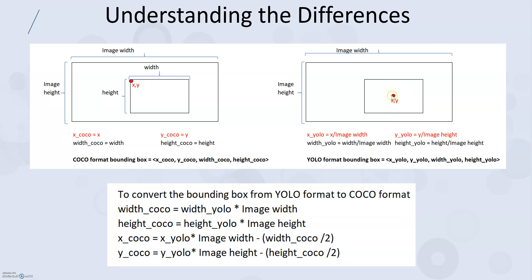In the YOLO format, we also have X, Y, width, and height, but they are not the same as COCO. The X and Y are the coordinates of the center of the bounding box, and further, they are not absolute — they are relative coordinates. X is given as X divided by the image width. Similarly, the width and height of the bounding box are given as relative values — divided by the image width and height respectively.